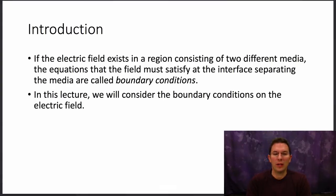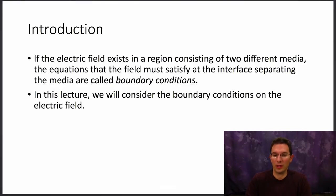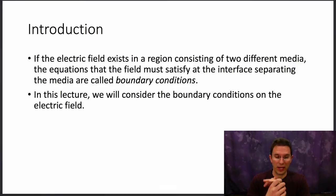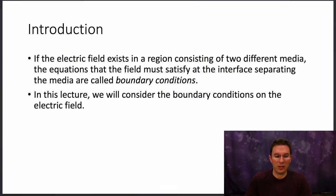If the electric field exists in a region consisting of two different media, the equations that the field must satisfy at the interface separating the media are called boundary conditions. Up to this point in the course we've been talking primarily about an electric field in a uniform medium, where the material parameters are constant throughout the region. Now we want to see what equations the electric field has to satisfy at the boundary between two different dielectrics. There are also boundary conditions that govern the magnetic field and we'll talk about that later in the course.